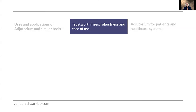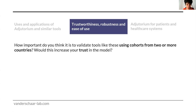Mihaela responds: We aim to build new tools to allow for this type of differential analysis, for different competing risks, and to evaluate different treatments across all of that. Moving now to the next part on trustworthiness, robustness, and ease of use: How important is it to validate tools like this using cohorts from two or more countries, and would this increase your trust in the model? This question is addressed first to Jim, who has worked with cancer registries from multiple countries.